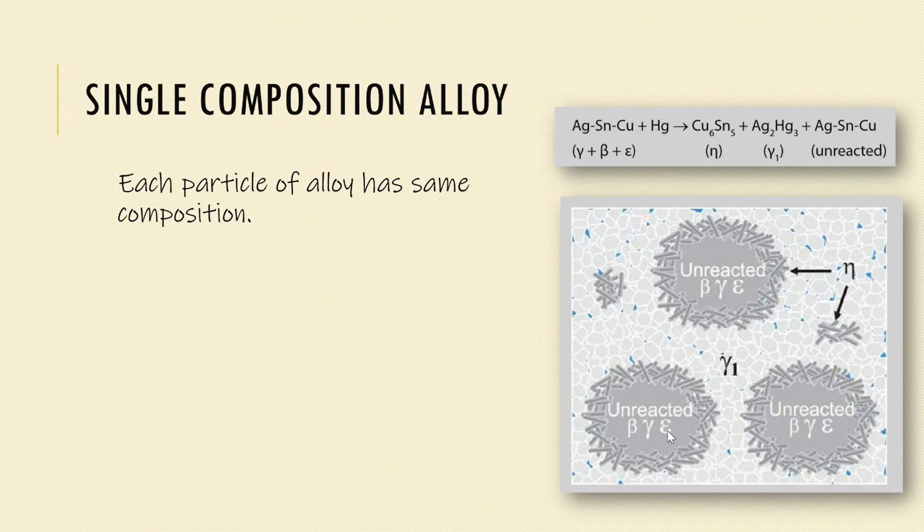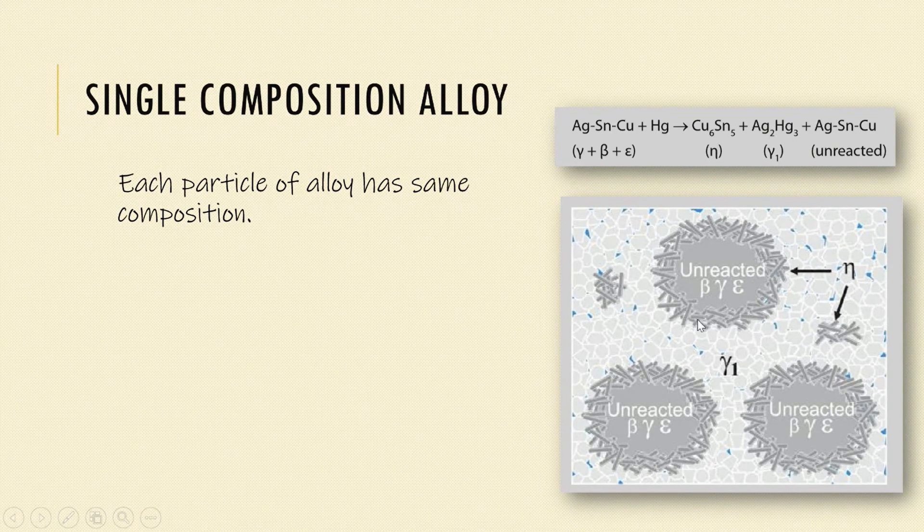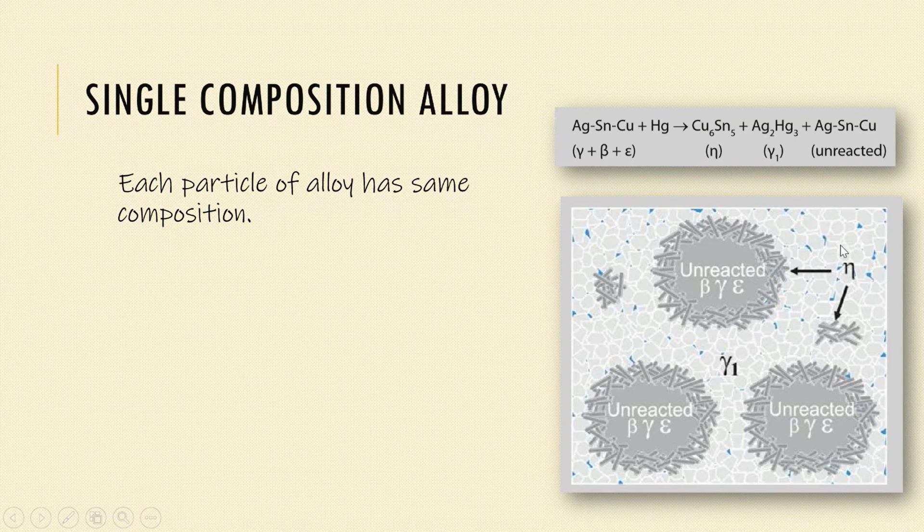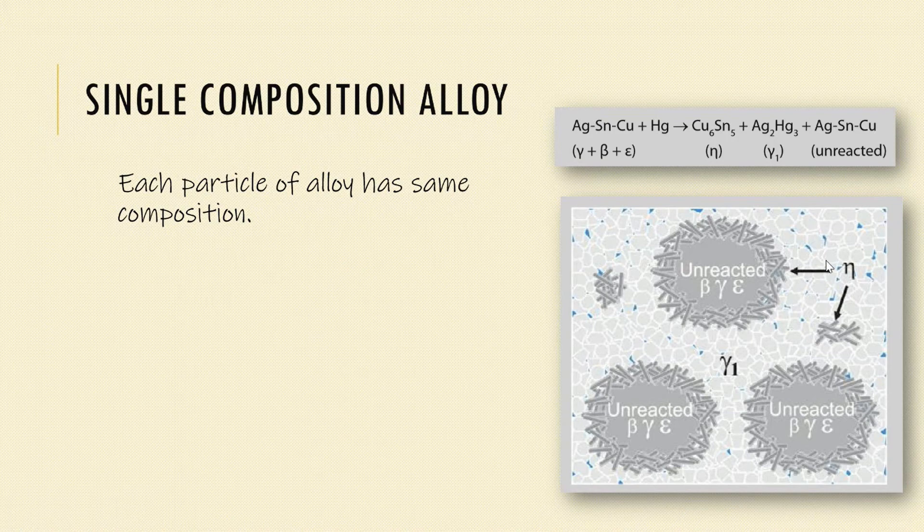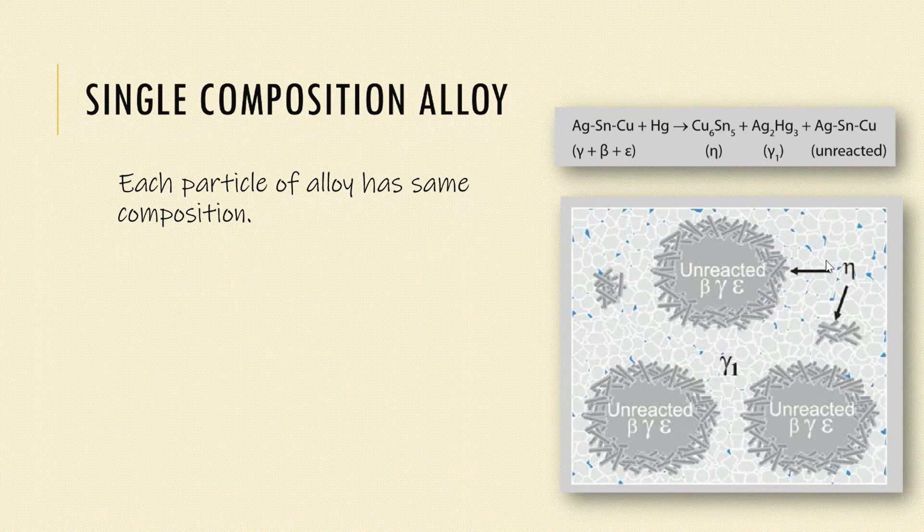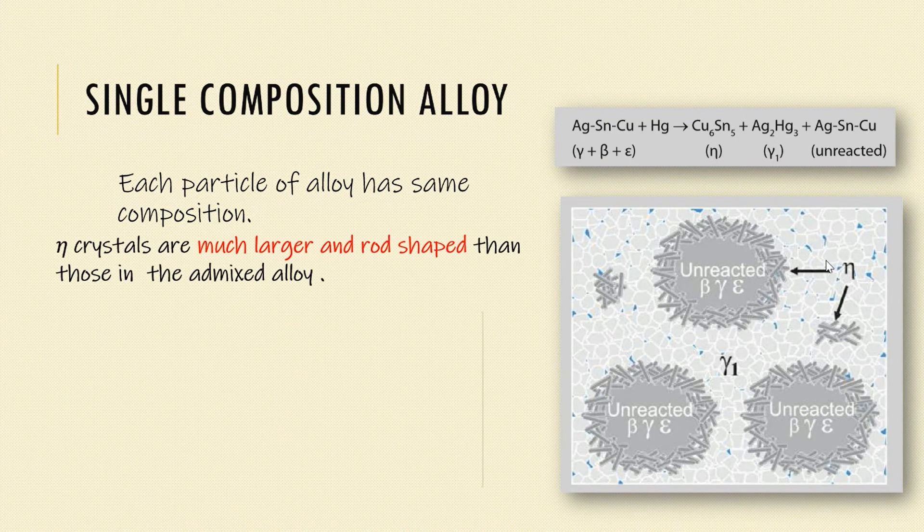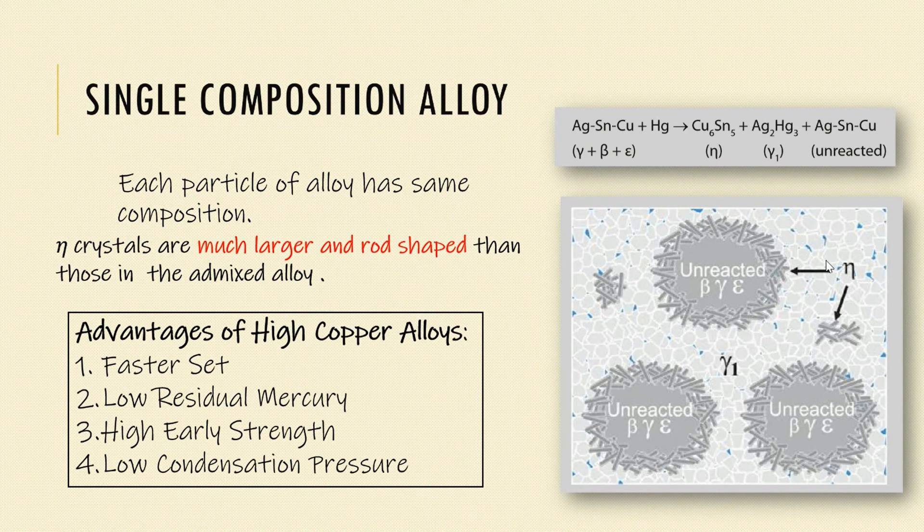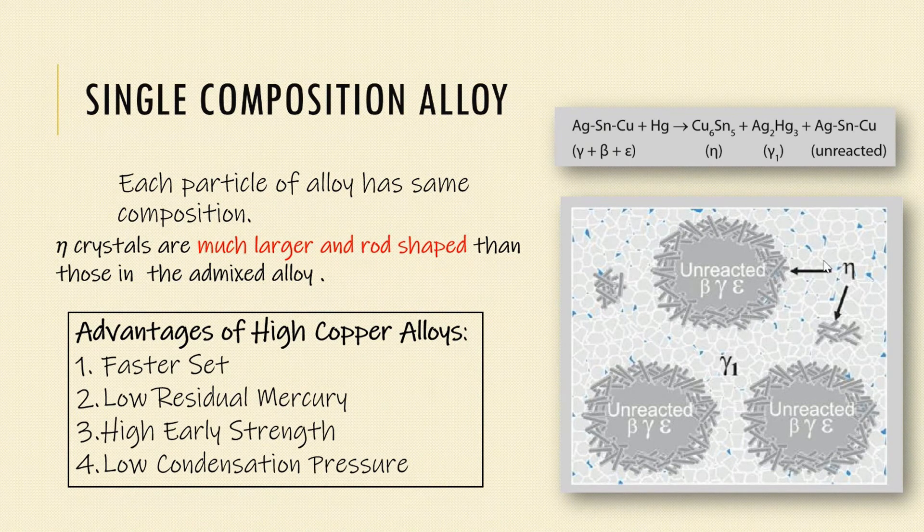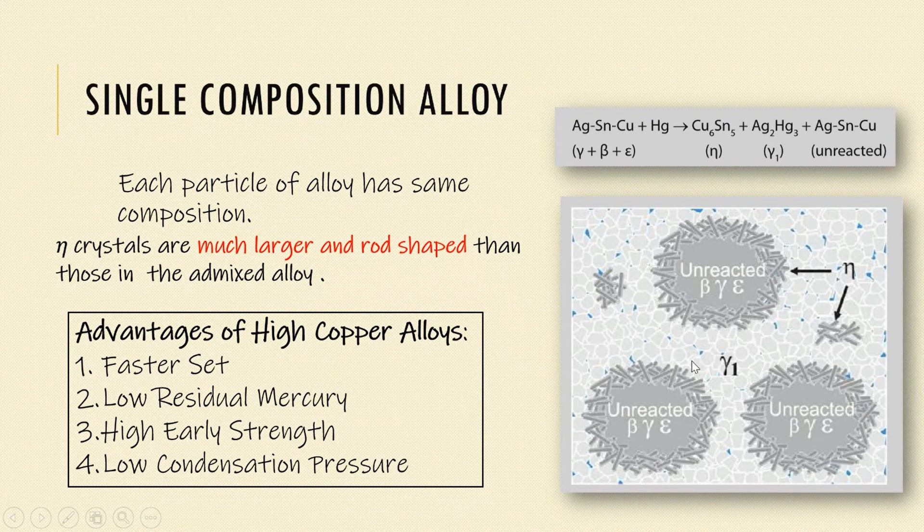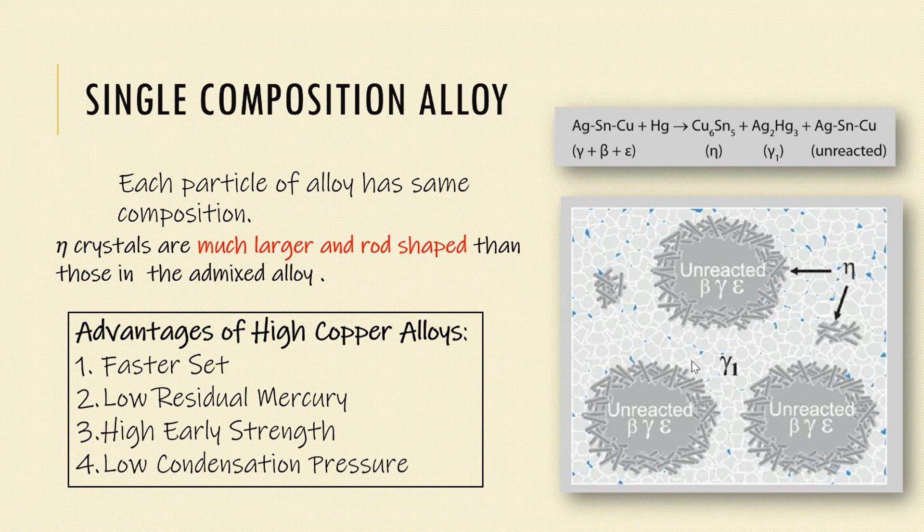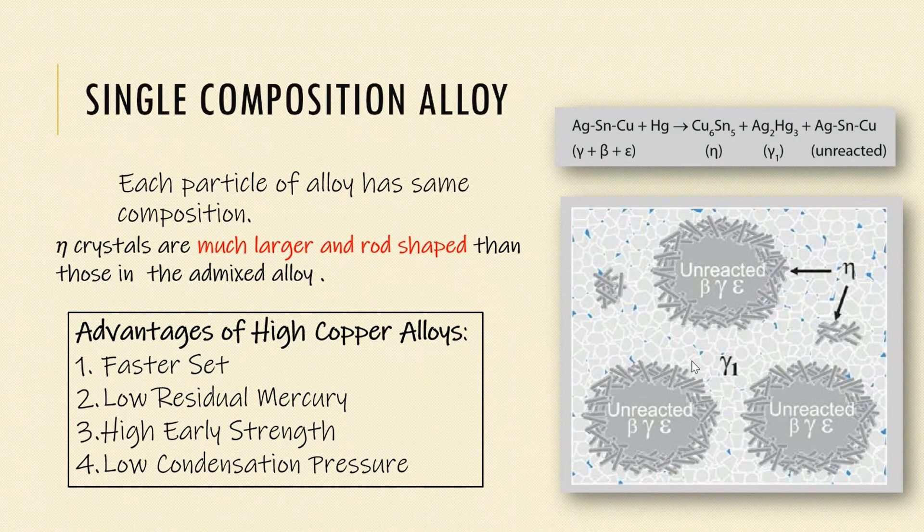At this stage, very little copper dissolves but later, a layer of eta crystals are formed at the surface of particles. Thus, the undesirable gamma 2 phase formation is eliminated. The advantage of these high copper alloys like the admixed and unicomposition alloys is that there is faster set, low residual mercury, high early strength, and low condensation pressure.